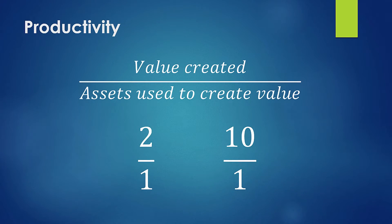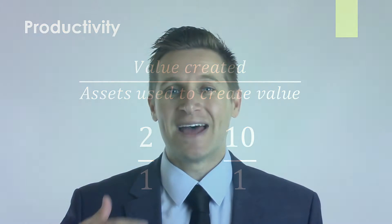So if you have a ratio of two to one, that's saying for every one dollar that came in you were able to create two dollars in value. And if you have a ratio of ten to one, that would mean for every one dollar that came in you had ten dollars in value that you created.